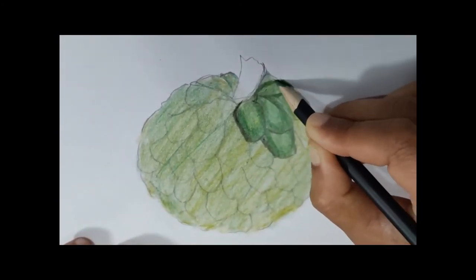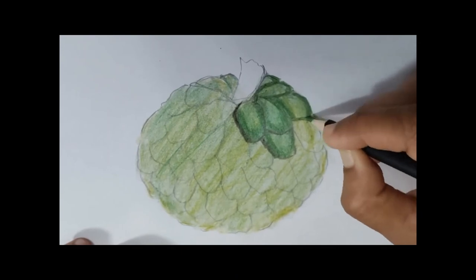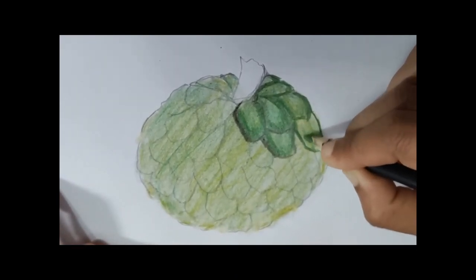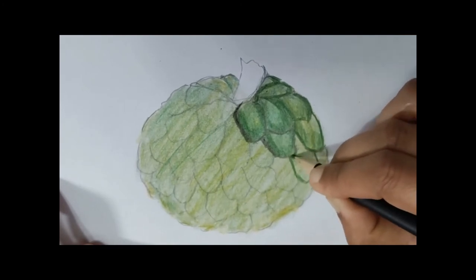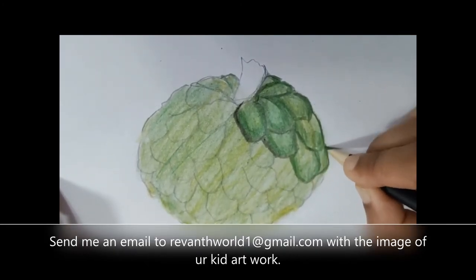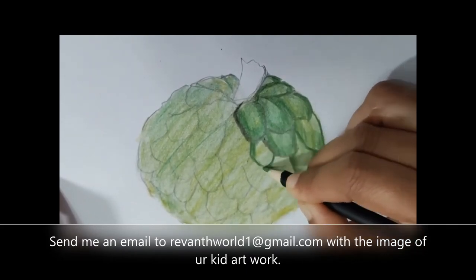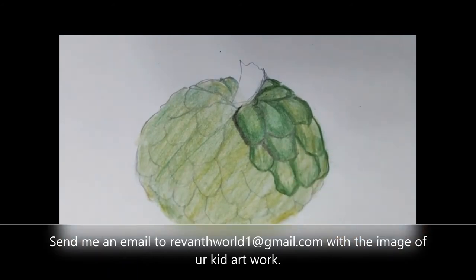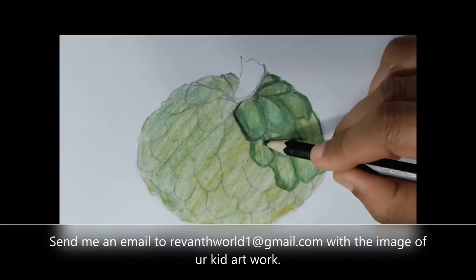You have to color the outline of the scale darkly and a little bit you have to shade it inside, so it will come like this. Like this you have to fill the entire custard apple outline.